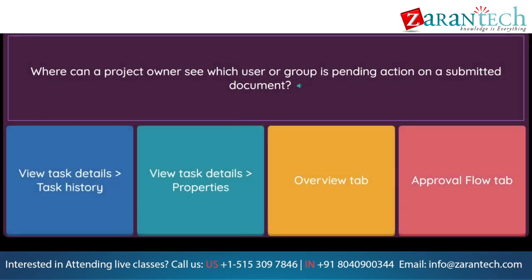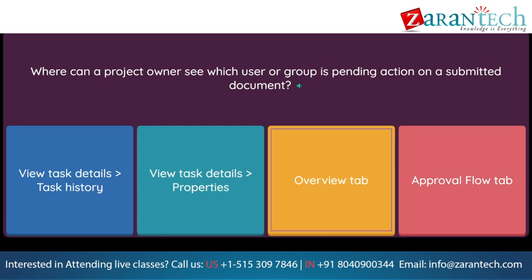Question: Where can a project owner see which user or group is pending action on a submitted document? Option 1: view task details task history. Option 2: view task details properties. Option 3: overview tab. Option 4: approval flow tab.